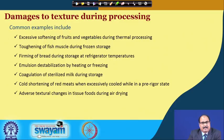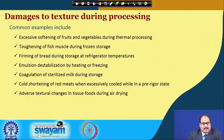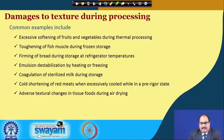There might also be certain damages to food texture during processing. Common examples include excessive softening of fruits and vegetables during thermal processing, toughening of fish muscle during frozen storage, firming of bread during storage at refrigerated temperatures — which we normally call bread staling — emulsion destabilization by heating or freezing, coagulation of sterilized milk during storage, cold shortening of red meats when excessively cooled in a pre-rigor state, and adverse textural changes in tissue foods during air drying.